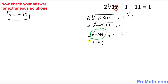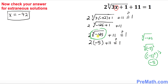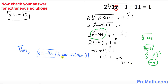We have 2 outside times negative 5, plus 11. That's negative 10 plus 11, which equals 1. Yes, 1 equals 1 — the statement is true. Therefore x equals negative 42 is indeed our solution. Thanks for watching, and please subscribe to my channel for more exciting videos.